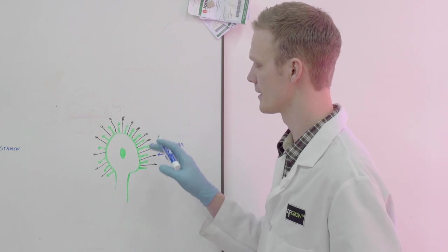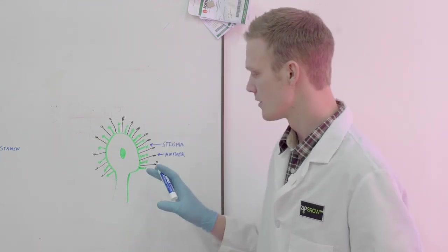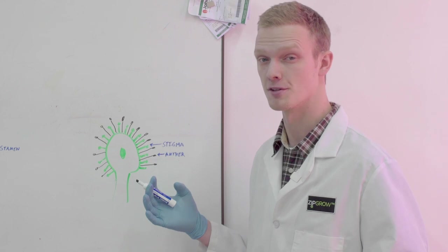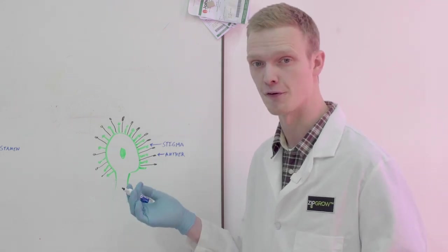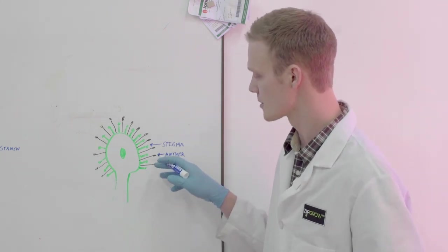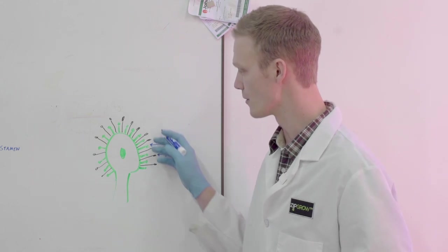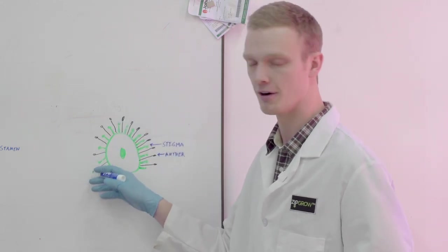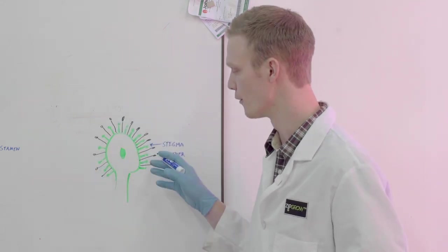Normally you pollinate the stigma and it would produce the seed inside of the fruit. Strawberries are what you call a compound fruit so they actually produce their seed on the outside of the fruit. What that means is there's multiple stigmas and anthers all around the outside of the flower or inside the flower rather on the outside of the ovary.